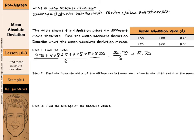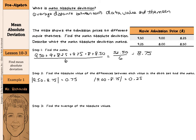Step two: find the absolute value of the differences between each value in the data set and the mean. So we'll look at each of the six prices and find out how far each of those is away from the mean. If we take $9.50, the absolute value of $9.50 minus $8.75 — the mean — is 75 cents. Next we'll have $9, and then $8.25. The absolute value of $8.25 minus the mean of $8.75 is 50 cents.